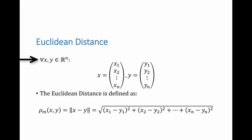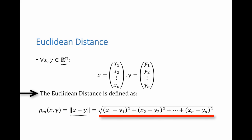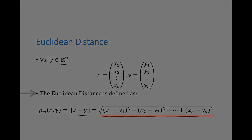For any of our spaces — ℝ¹, ℝ², ℝ³, or ℝⁿ — given vectors x and y, the Euclidean distance between those two vectors is defined as the norm of x minus y. This function satisfies the three properties we discussed in the previous slide.